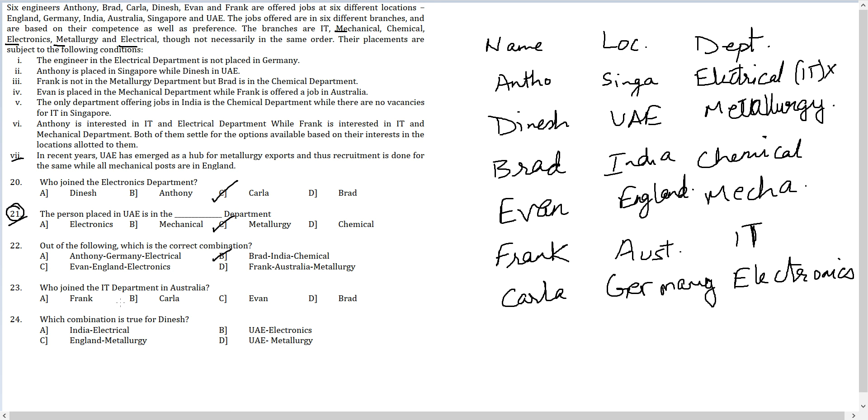Who joined the IT department in Australia? Has to be Frank. Which combination is true for the nation? UAE metallurgy? So option D, UAE metallurgy. That is the entirety of this question. Check it out. Thank you.